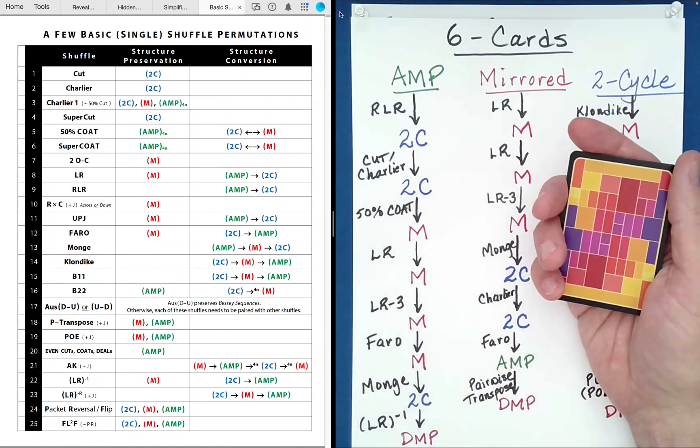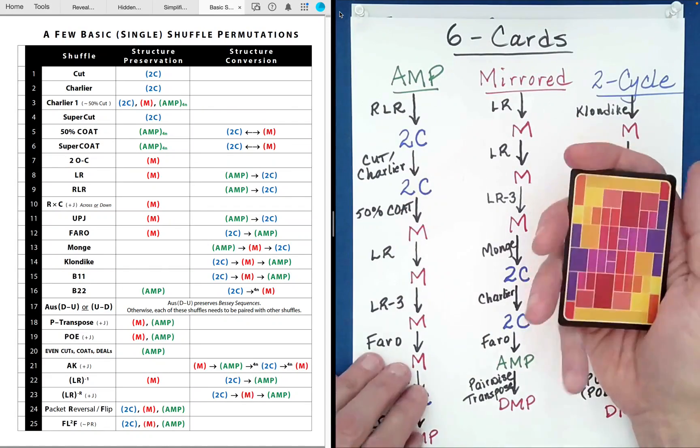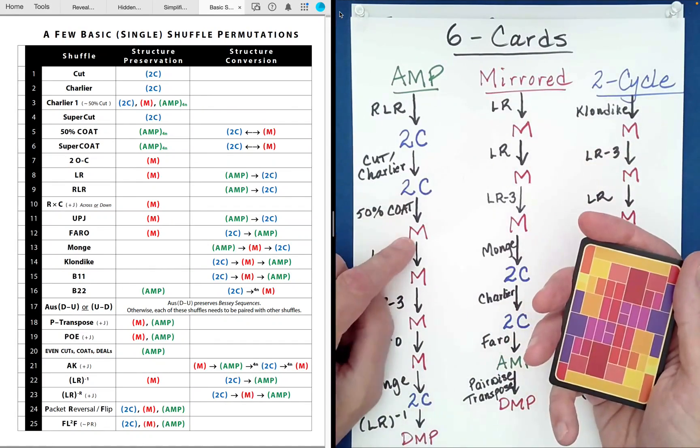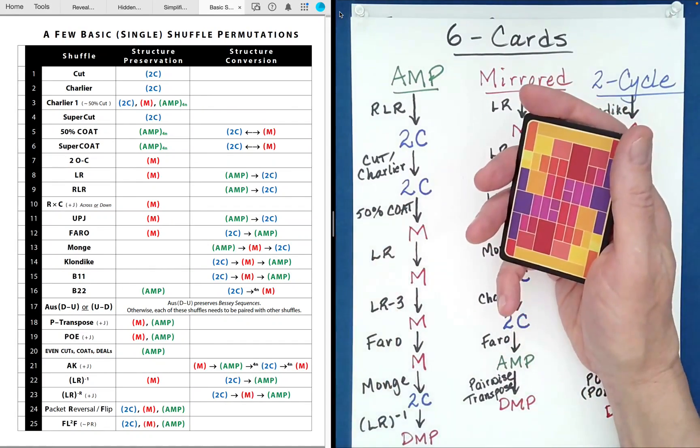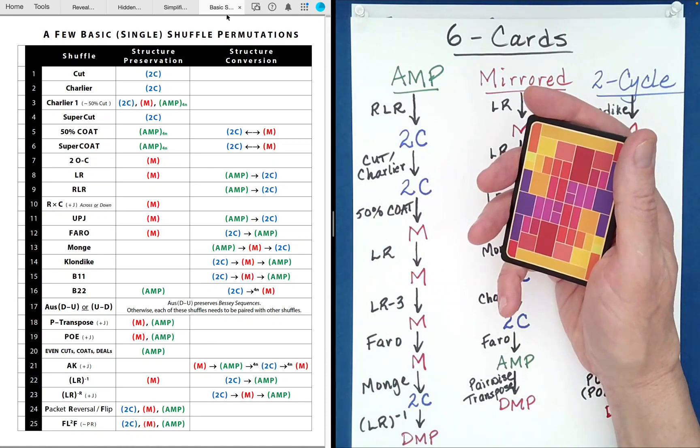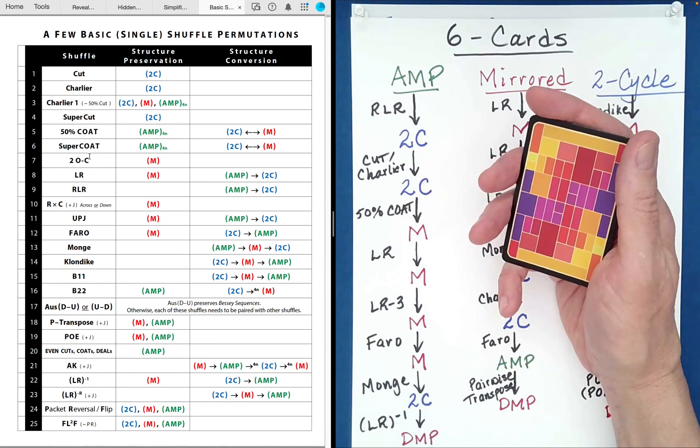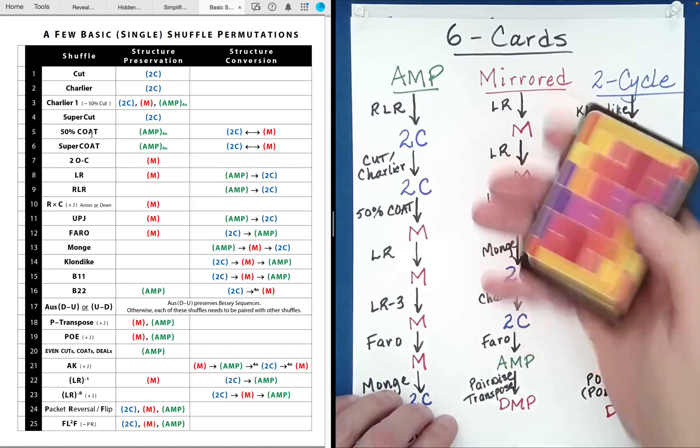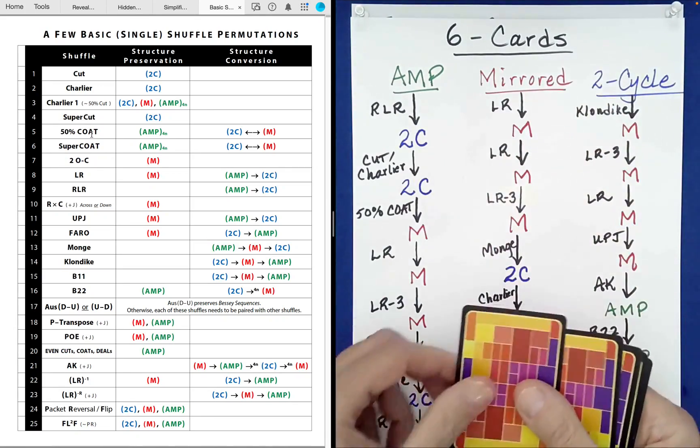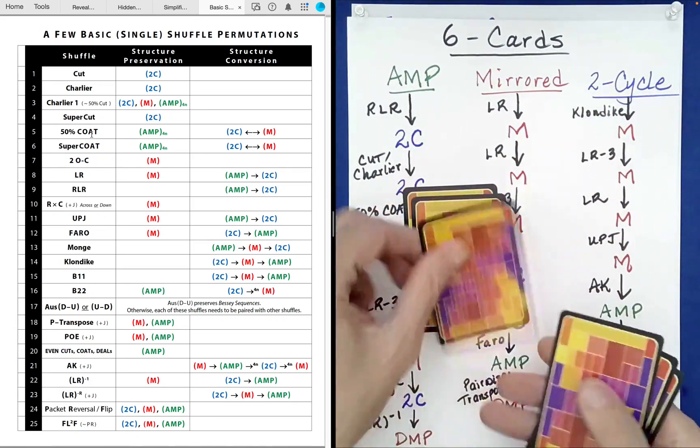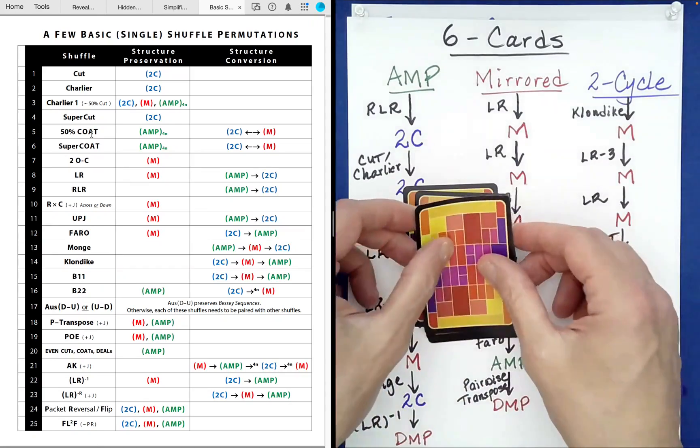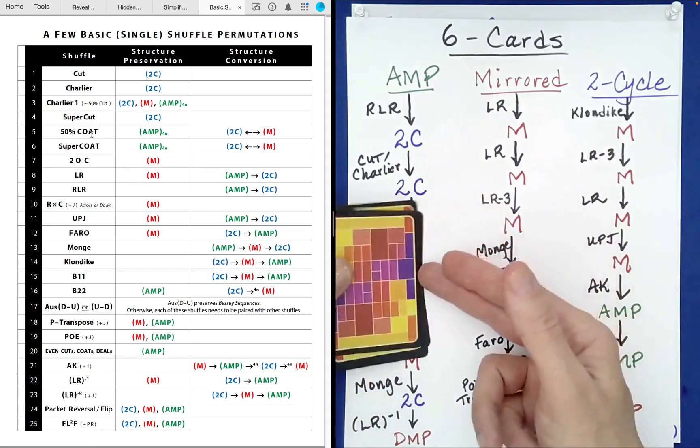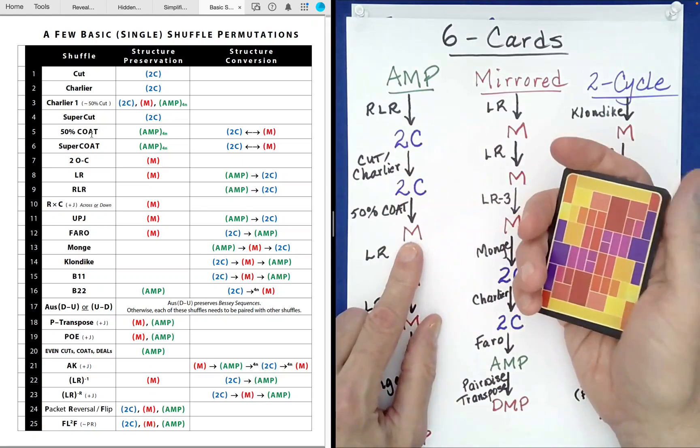Okay so this is still a two cycle structure. Now what you can do here to get to a mirrored structure, if you just look over here on the chart, of a 50% coating, it's line five. What this will do is if you count out half the cards, one, two, three, drop the rest on top, then that will convert it to a mirrored structure. It's mirrored now.